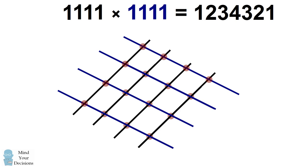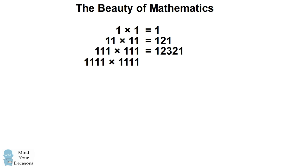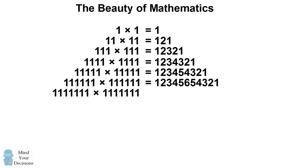If you wanted to add a fifth 1, multiplying it by itself, you add one more line on the left and one more line on the right. It increases each of the existing columns by 1 and adds one on each end. That's why this pattern continues, producing palindromic numbers that count up in increasing order and then count back down. This explains how we get all the way up to 9.